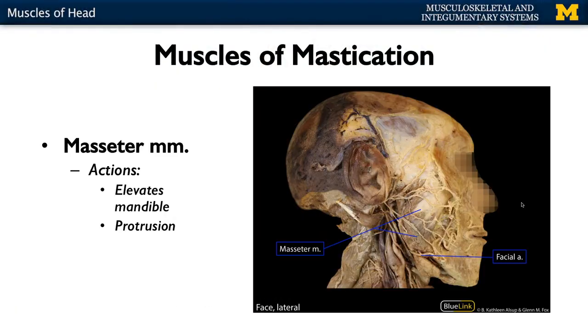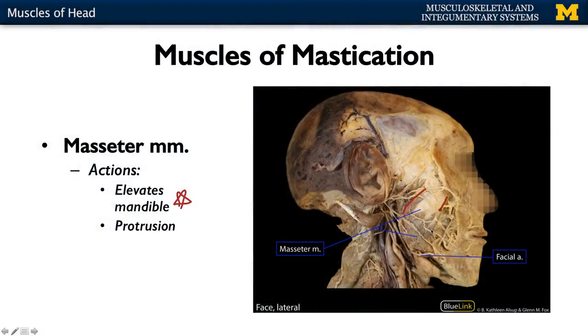The strongest — most powerful — muscle of mastication is your masseter. Similar to the temporalis, it plays a big role in closing or elevating the mandible. It's also one of the main protruders, allowing you to jut out your chin. You can see the masseter muscle here in this visual — those facial nerve branches are superficial and the masseter is right underneath. You can palpate this one as well, particularly when you clench right at the angle of your mandible.